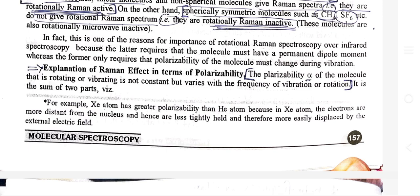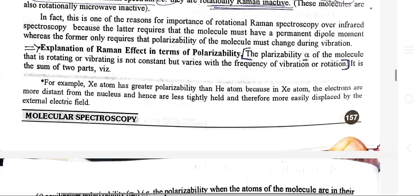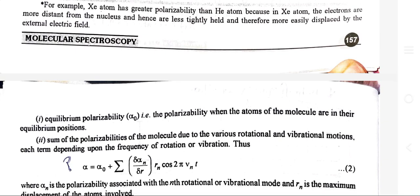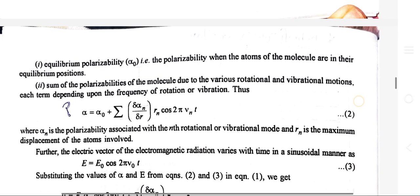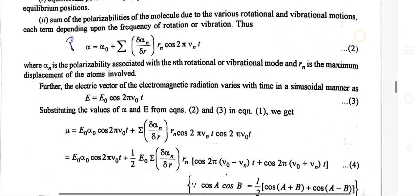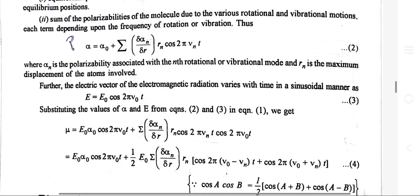Explanation of the Raman effect in terms of polarizability: the polarizability α of a molecule that is rotating or vibrating is not constant but varies with the frequency of vibration or rotation. It is the sum of two parts — the equilibrium polarizability (the polarizability when atoms are in their equilibrium positions) and the polarizability due to the various rotational and vibrational motions, each term depending upon the frequency of rotation or vibration. Here αₙ is the polarizability associated with the nth rotational or vibrational mode and rₙ is the maximum displacement of the atom involved.